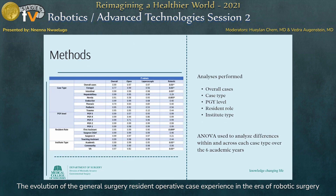Analyses were performed of overall cases, as well as participation by case type, postgraduate year level, resident role, and institute type. ANOVA was used to analyze differences amongst these variables, both within and across each case type, over the six academic years. Statistical significance was defined as a p-value of less than 0.05.